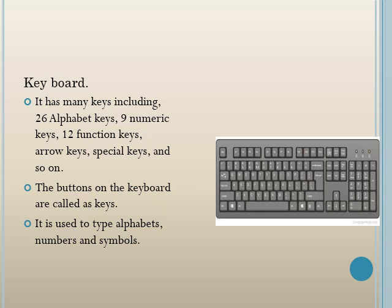CPU is the brain of the computer. The keyboard has many keys — there are alphabet keys, number keys, function keys, arrow keys, and special keys. The keyboard helps us to type alphabets, numbers, and symbols. Whatever we want to type on the computer, we can type with the help of the keyboard, and the buttons on it are called keys.